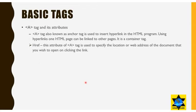The anchor tag, also known as the A tag, is used to insert hyperlinks in an HTML program. Using hyperlinks, one HTML page can be linked to other pages — it is a container tag. The href attribute specifies the location or web address of the document to open when the link is clicked. Once the anchor tag is used, it displays a clickable link on the page.